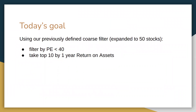Today's goal is to filter to have a price-to-earnings ratio less than 40. The price-to-earnings ratio is basically: if you bought a company outright, how much would it cost — that's the price — and then you divide by the 12-month earnings.